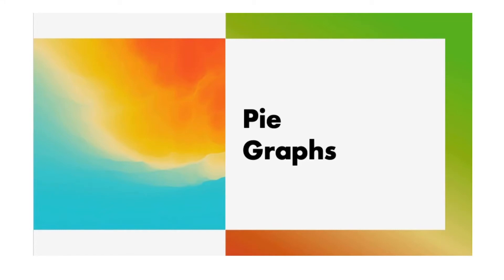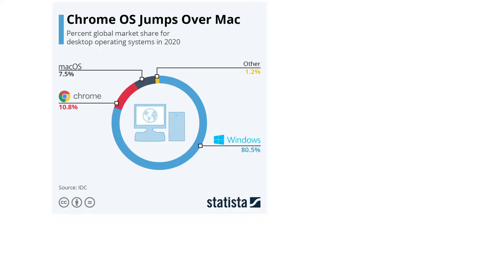In this short video, we take a look at a second way to represent data visually — with something called a pie graph, also sometimes referred to as a circle graph. Let's take a look at the following circle graph from Statista. It represents the percent global market share for desktop operating systems in 2020.